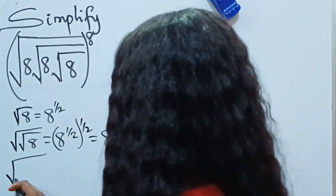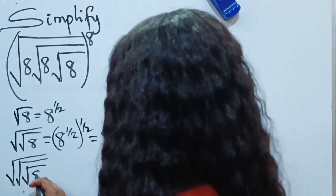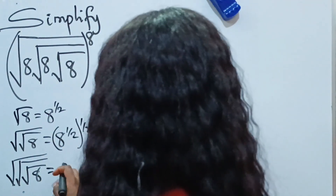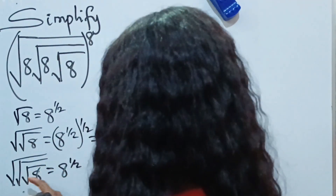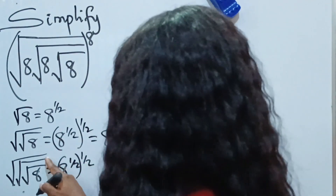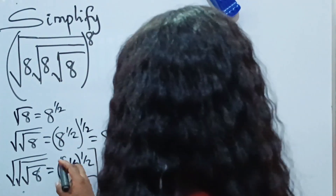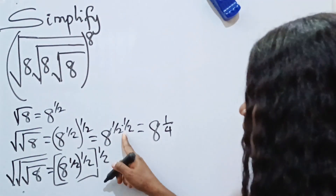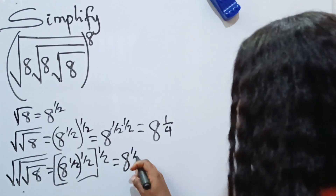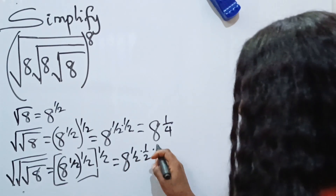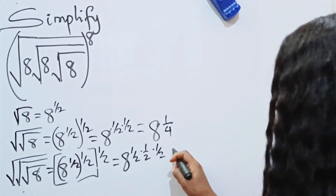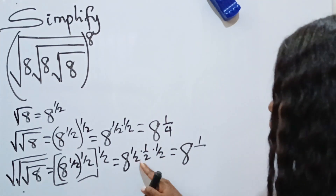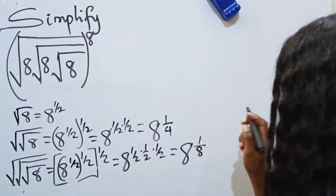Now, the square root of the square root of the square root of 8 should be equal to 8 to the power of one half — the first — raised to the power of one half — the second — raised to the power of another half — the third. If we resolve this, it's going to be 8 to the power of one half multiplied by one half multiplied by one half, which gives us 8 to the power of 1 over 8, since 2 times 2 times 2 gives us 8.